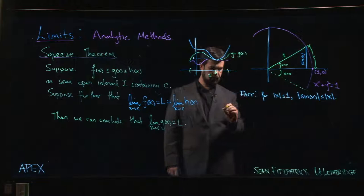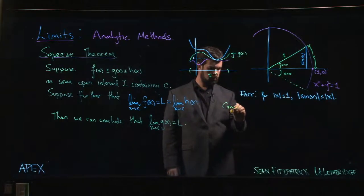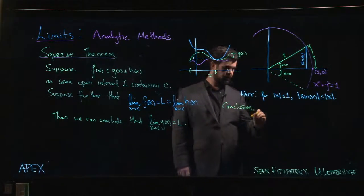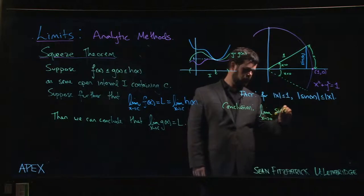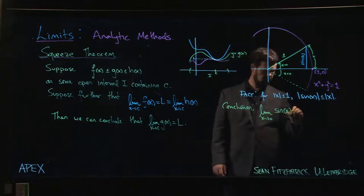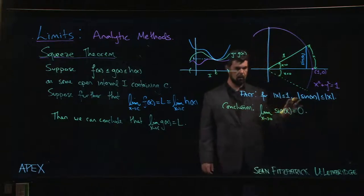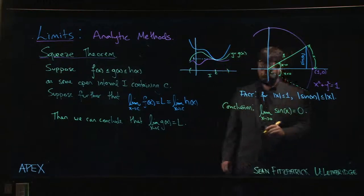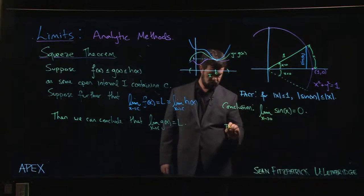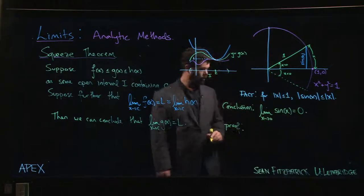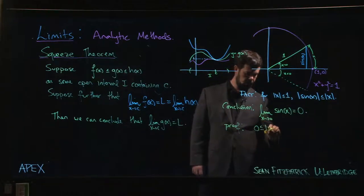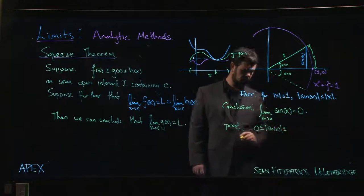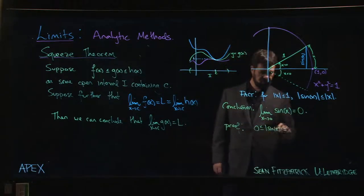And the conclusion from this is that the limit as x goes to zero of sine x is zero. Why? Well, because we know that any absolute value is bigger than or equal to zero, so the absolute value of sine x is in between zero and x.